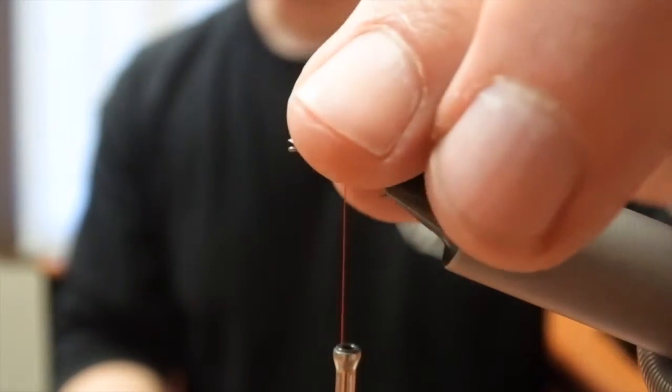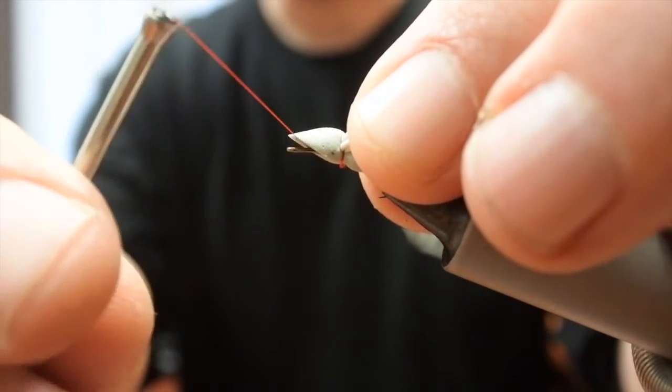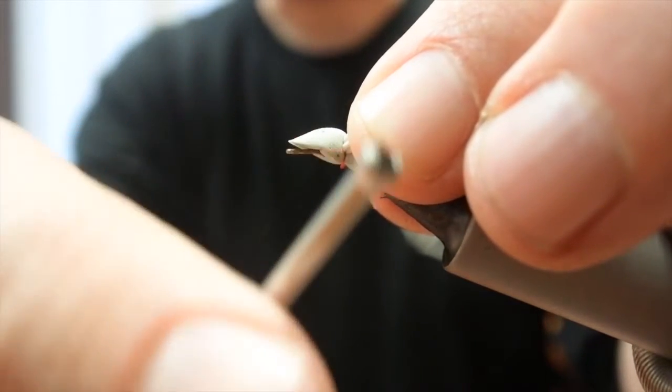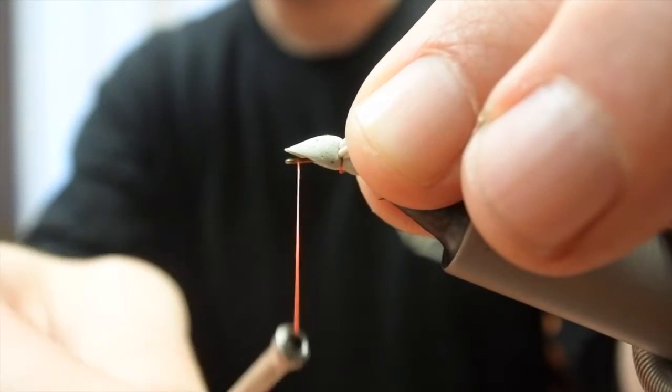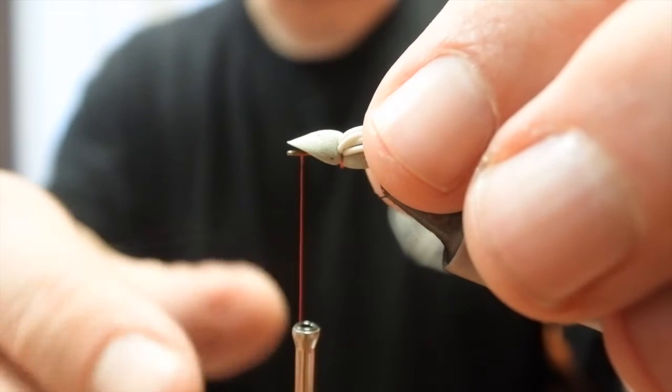We're going to move the thread up to the front. I sweep back the legs and start winding the thread underneath the body up to the eye of the hook. Now it's time to secure that body.